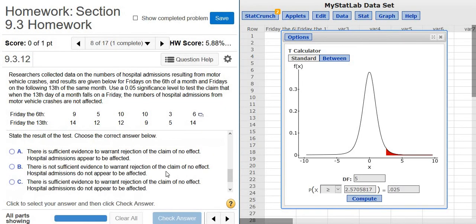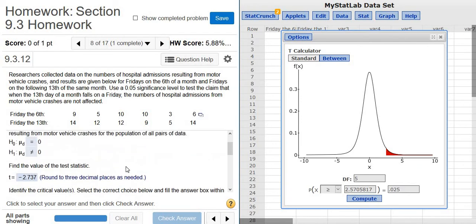Now we need to figure out whether or not we reject the null hypothesis. So to do that, you look at your test statistic. Our test statistic was negative 2.737. So this test statistic, it's right here where my mouse is, right here in this red area, because this negative 2.57 is right here, it's this little tip, it's where the red begins. So the test statistic falls in what's called the critical region. So whenever that happens, you end up rejecting the null hypothesis.